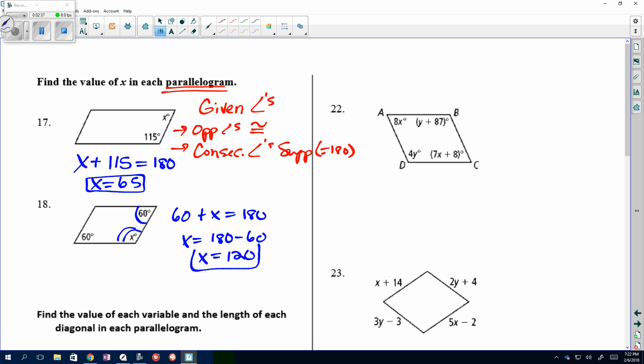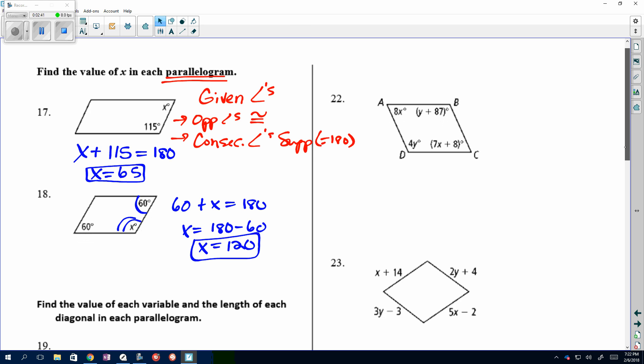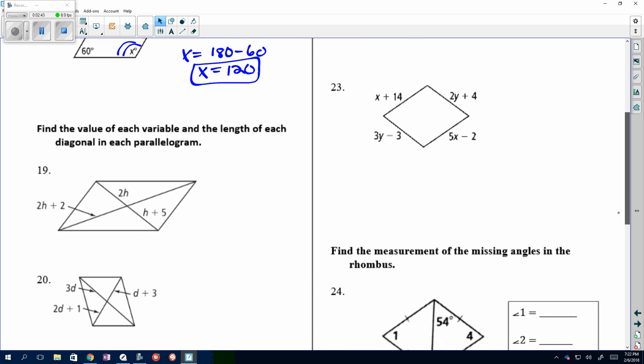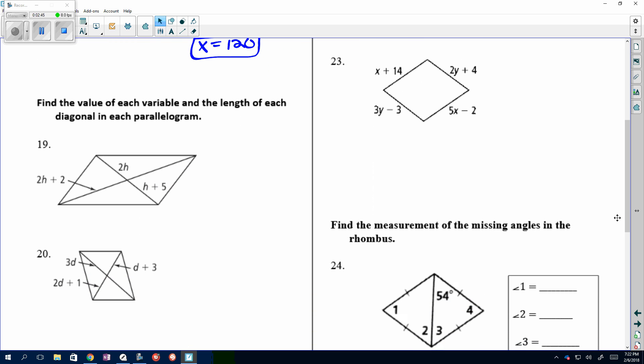So, the key to this is take what's given and use what's given, whether it's marked or it's stated with words and the instructions, and then use that to focus on that part in the property sheet, in the summary sheet. So, here, they want us to find the value of each variable and the length of the diagonals in each parallelogram. So, the key here is dealing with diagonals and then the parallelogram.